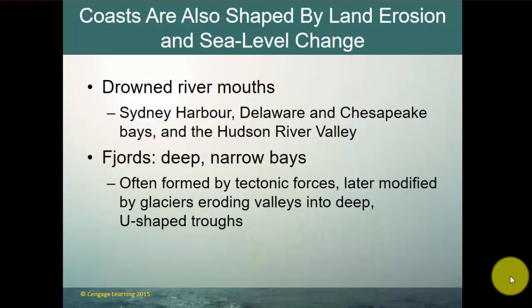Coasts can also be shaped by land erosion and sea level change. When sea level rises up into a canyon or where a river has cut down to the sea, you get drowned river mouths — examples include the Delaware, Chesapeake Bay, and the Hudson River Valley. Fjords are deep, narrow bays formed by tectonic forces and later modified by glaciers that erode valleys into deep U-shaped troughs; as sea level rises, it drowns those troughs to create deep, narrow fjords.